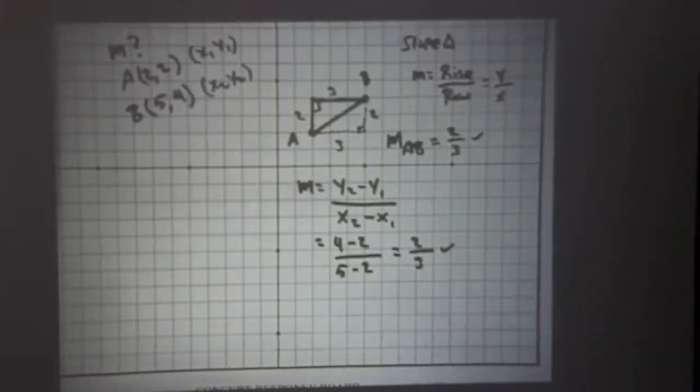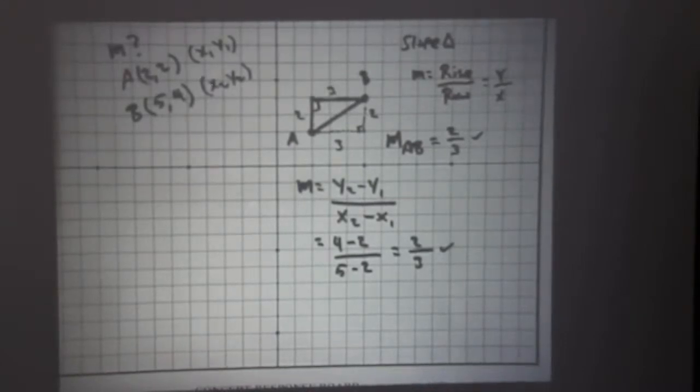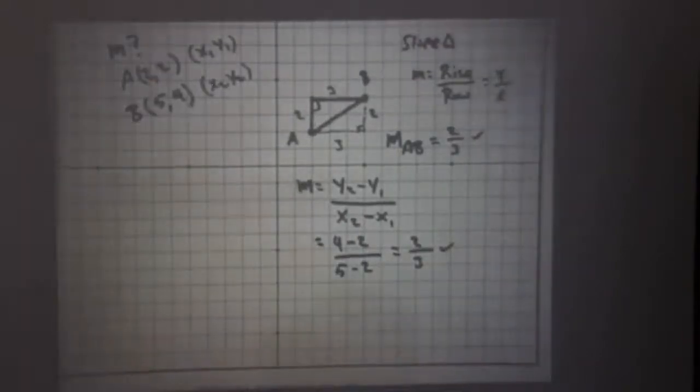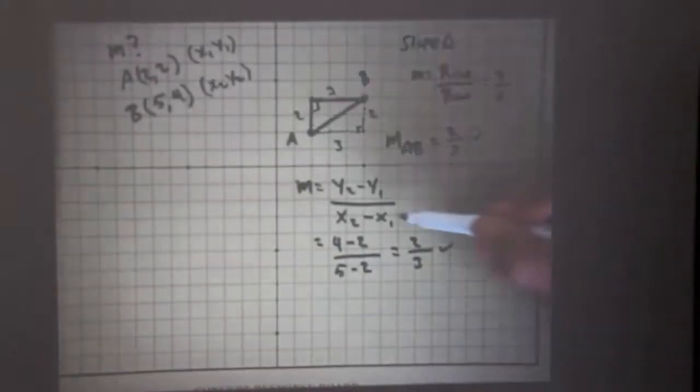The slope triangle is nice if the values are small and you're given a line. You can draw the triangle to figure out the slope. Many times we're just given two points at random and you have to find the slope. You've got to put them together in the equation or formula for slope. It's probably easier that way.